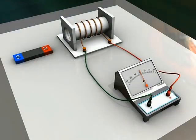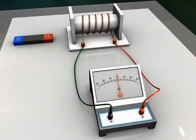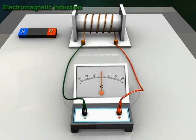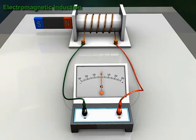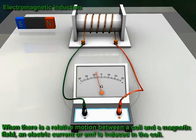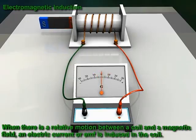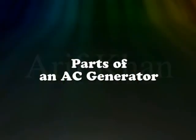Working principle of an AC generator: an AC generator works on the principle of electromagnetic induction. In electromagnetic induction, when there is a relative motion between a coil and a magnetic field, an electric current or EMF is induced in the coil.